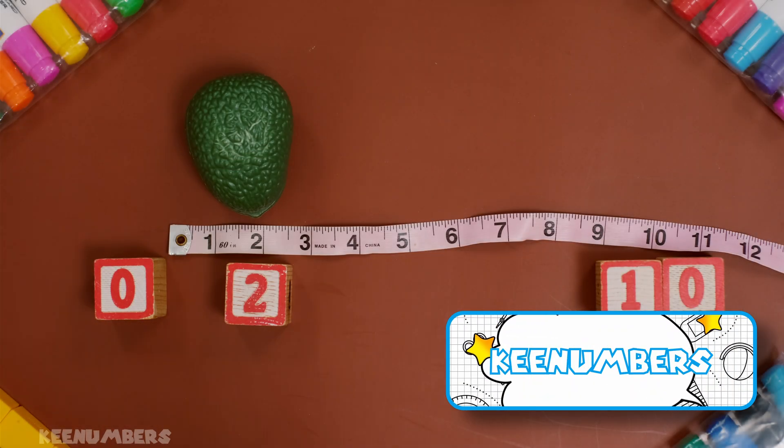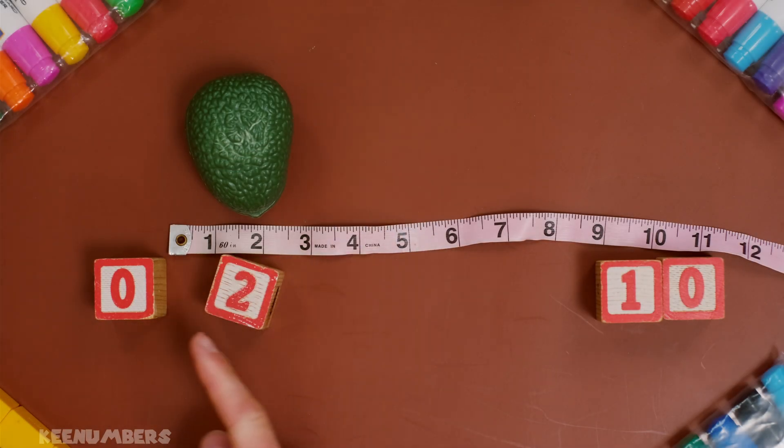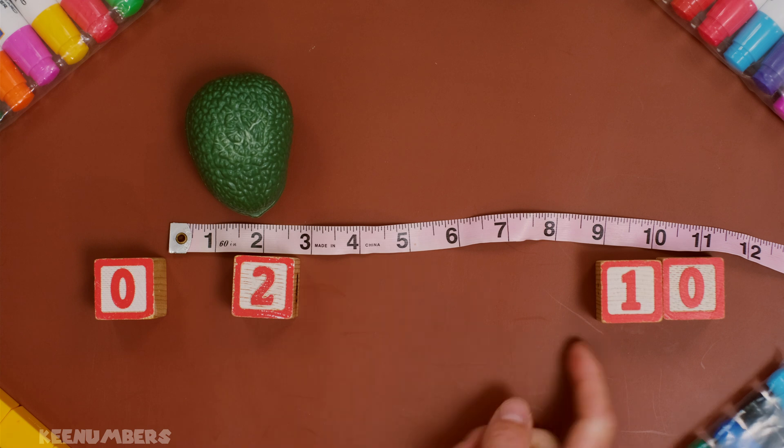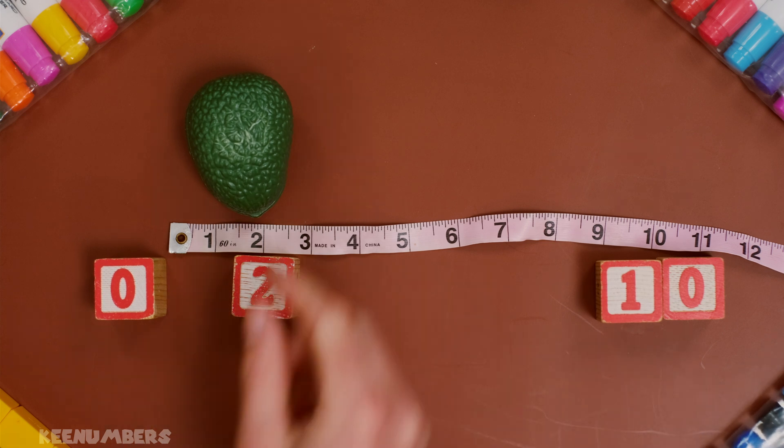Key numbers. Two avocados. What's it closer to? Is it closer to zero? Or is it closer to ten? Yeah! It's closer to zero! Look at that!